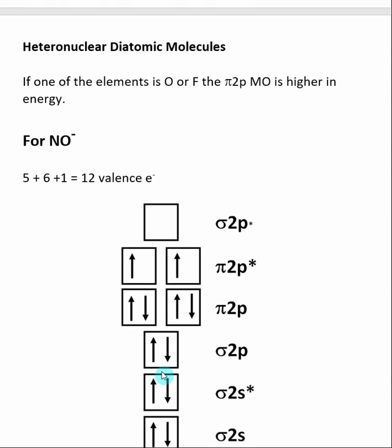Thus far we have looked at diatomic molecules where both elements were the same. If the two elements are not the same, and if one of the elements is either oxygen or fluorine, the pi 2P molecular orbital will be higher in energy than the sigma 2P molecular orbital. This is the key difference to understand when constructing the molecular orbital diagram for heteronuclear diatomics.